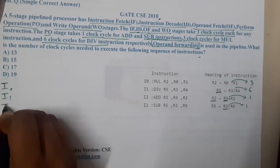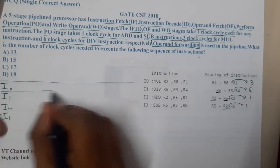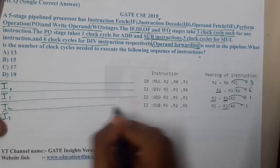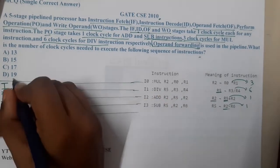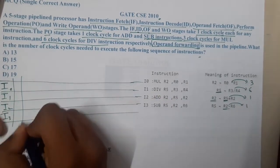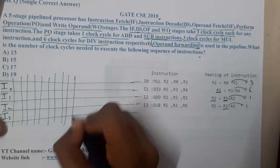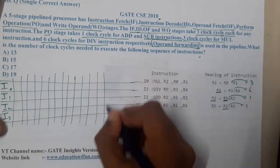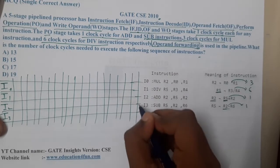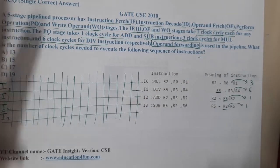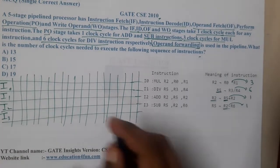We have instructions I0, I1, I2, and I3. This exact question was solved in the course discussion lecture from PYQs, where both forwarding and without-forwarding methods were covered. Here we will solve only the operand forwarding case. For the without-forwarding solution, refer to that earlier lecture.